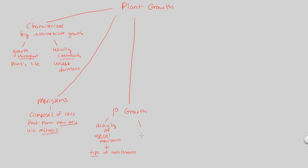What is the purpose of primary growth? Primary growth results in an increase in stem and root length — that's the job here. The job is to grow the roots and the shoots, which include stems and leaves, and also the roots themselves. Both are going to grow in length.